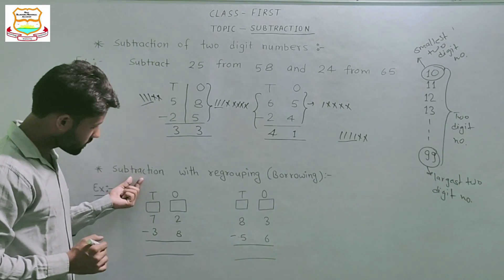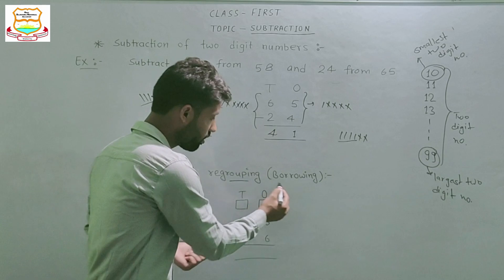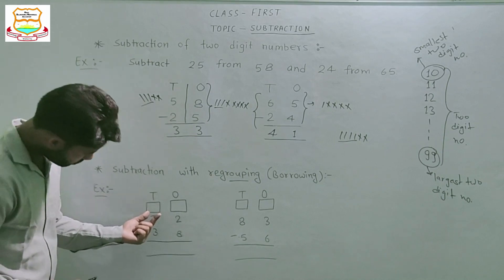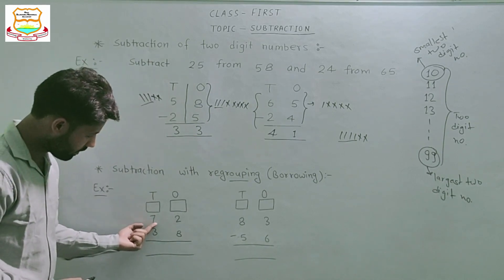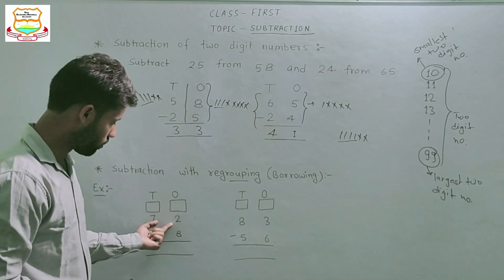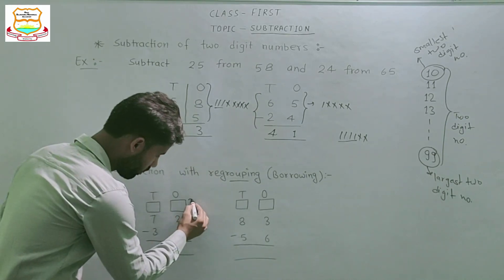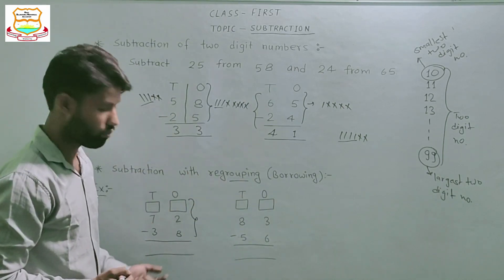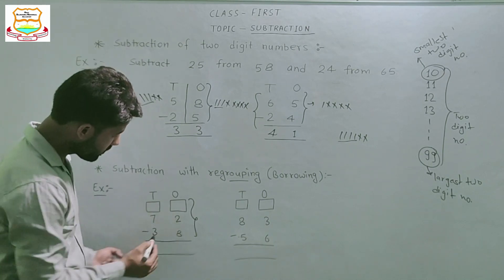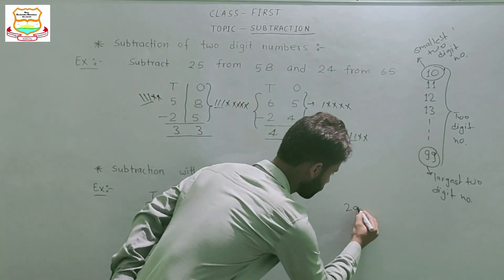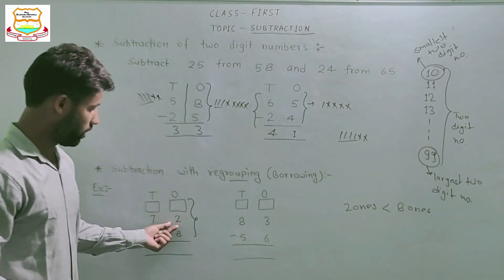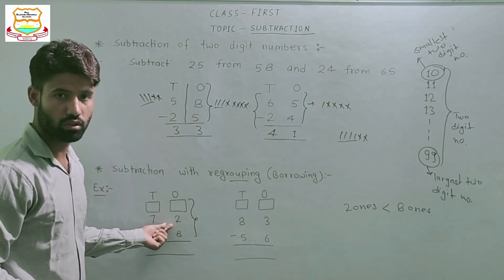The next topic is subtraction with regrouping, or borrowing. First example: subtract 38 from 72. First subtract ones to ones — that means 2 ones minus 8 ones. But 2 ones is smaller than 8 ones, and it is impossible to subtract 8 ones from 2 ones.